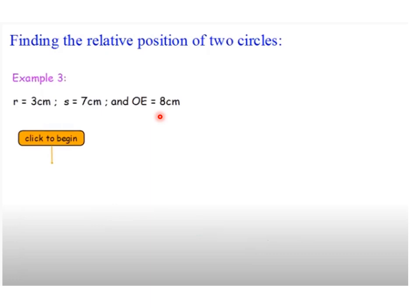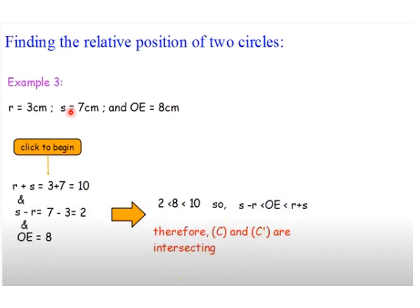In the final example, given R, S, and the distance between centers, we first calculate R plus S equals 10 and R minus S equals 2, then compare with OE equals 8. Since 8 is between 2 and 10, the rule for intersecting circles applies — we conclude that C and C′ are intersecting circles.